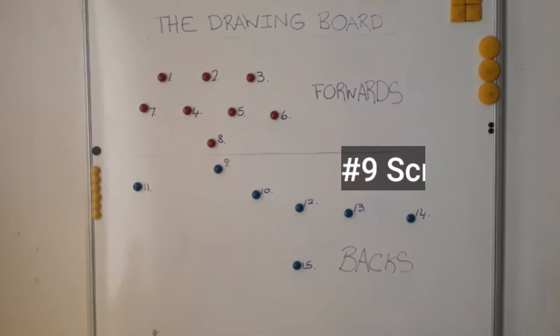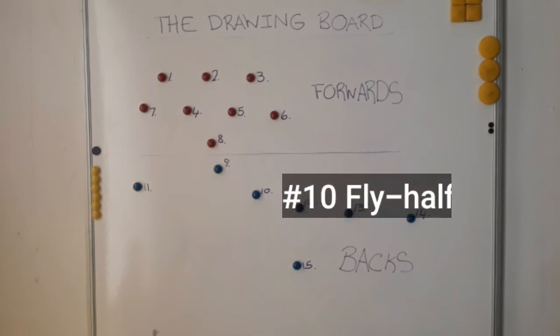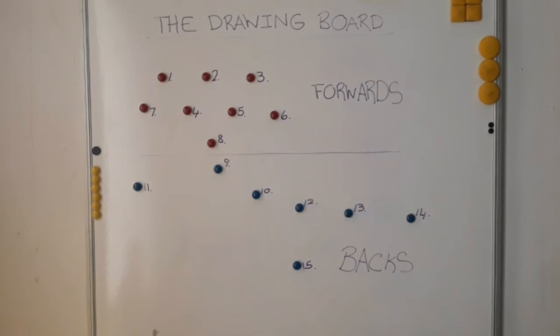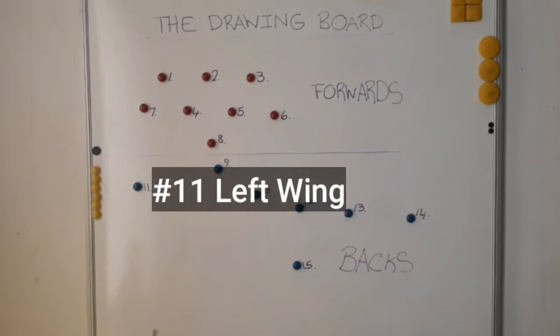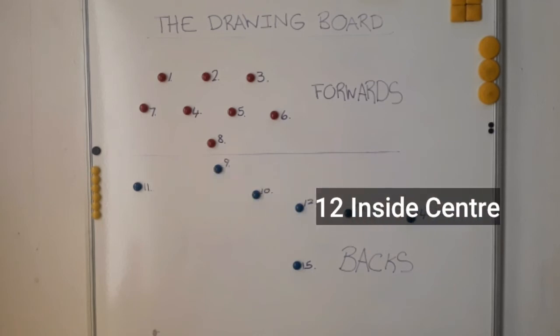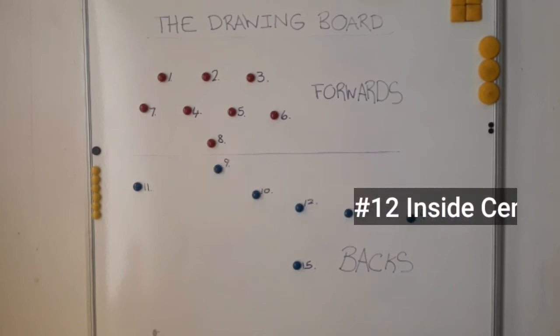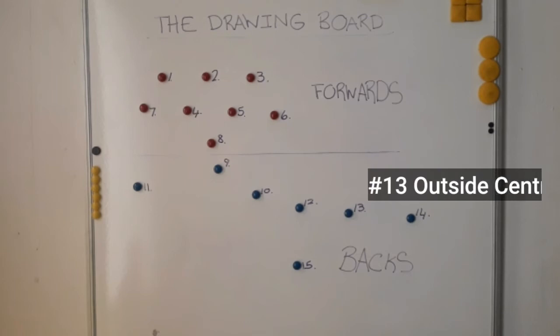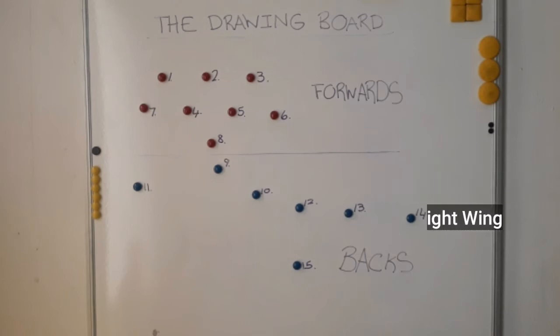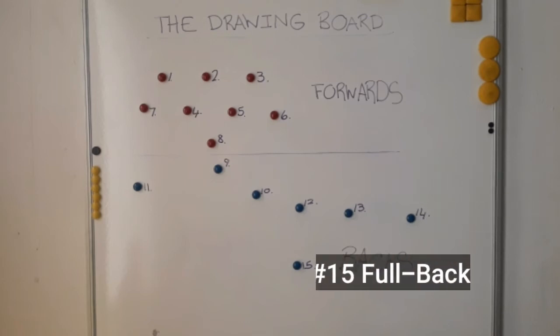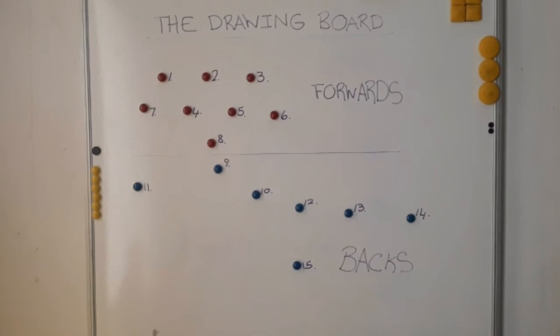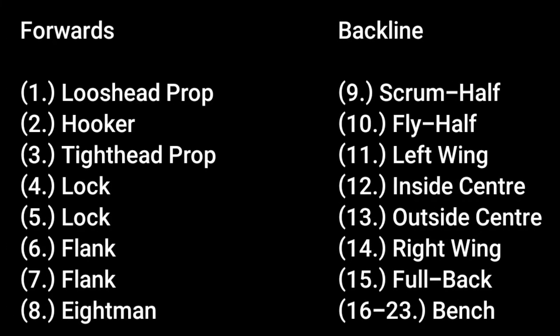Getting to the backline players: number nine is the scrum-half, number ten is the fly-half, number eleven is the left wing, twelve is the inside center, thirteen is the outside center, fourteen is the right wing, and fifteen is the fullback.